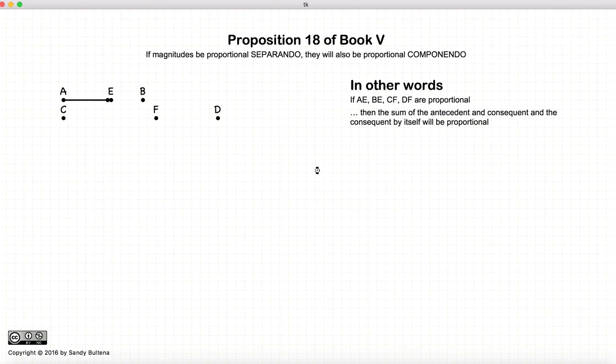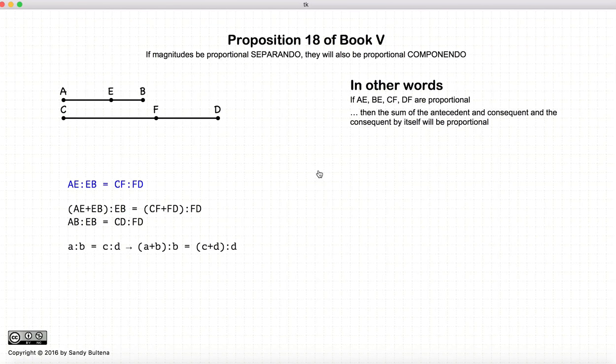This proposition is very similar to proposition 17. In actual fact, it's the inverse proposition of 17, which states that if we have two ratios, AE to EB and CF to FD.